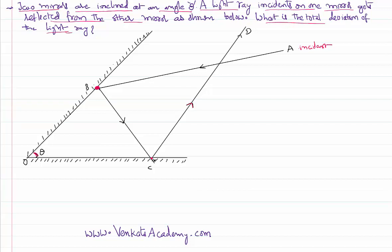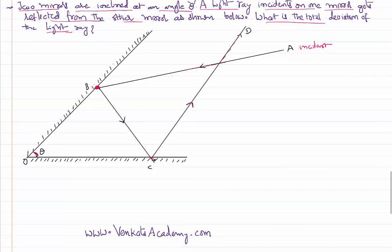The light ray is supposed to go straight, but it has been deviated from its path by a certain angle — that is the total deviation we need to measure.